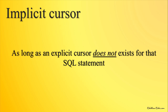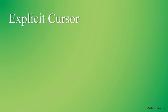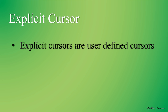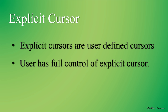In contrast to implicit cursors, we have explicit cursors. Explicit cursors are user-defined cursors, which means the user has to create these cursors for any statement which returns more than one row of data. Unlike implicit cursors, the user has full control of explicit cursors.